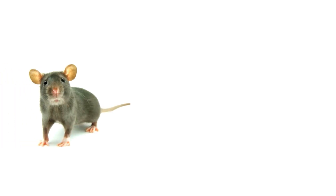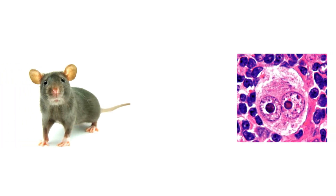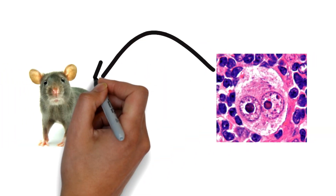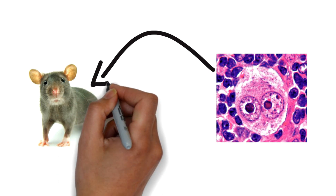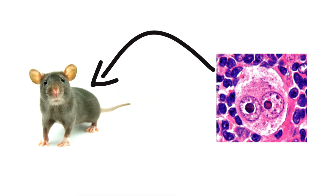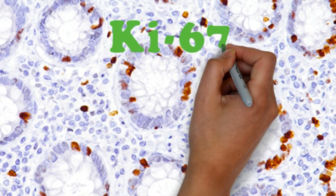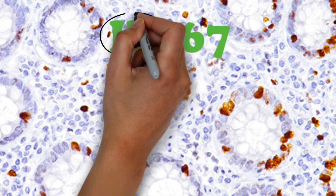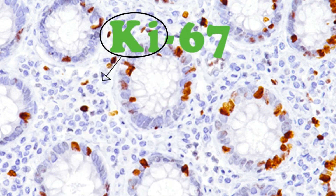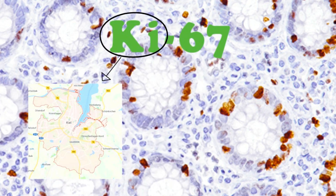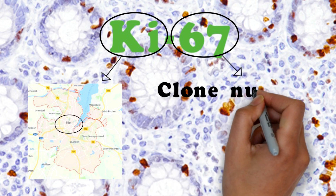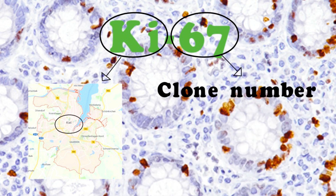Regarding the historical aspect, the first ki-67 antibody was generated by immunizing mice with nuclei of Hodgkin lymphoma cells. The name ki-67 is derived from the city of origin, Kiel, which is situated in Germany, and the number 67 is the clone number.